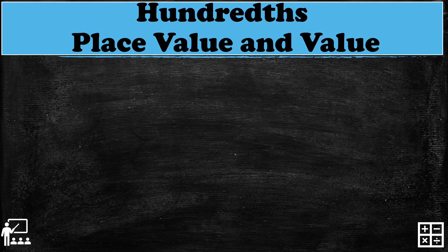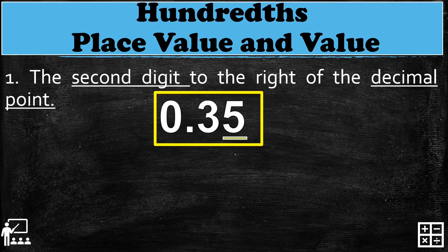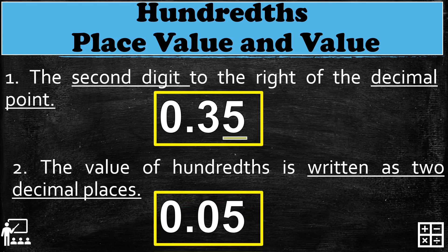Next, the hundredths place value is the second digit to the right of the decimal point. Again in 0.35, the underlined number 5 is the hundredths place value because it is the second digit to the right of the decimal point. To write the value of the hundredths, we write it as two decimal places: 0.05. We replace the 3 with a zero to show the value of the hundredths place.